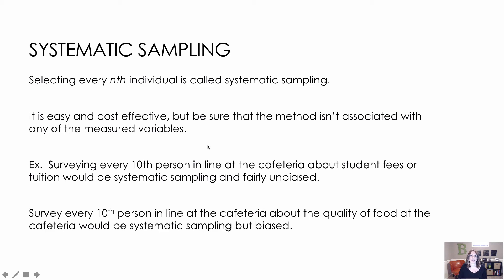Systematic sampling is when you choose every nth individual. For instance, if people are standing in line at the cafeteria and I talk to every fifth or every tenth person, that would be systematic sampling. It's typically easy and cost-effective. We need to make sure the method isn't associated with any of the measured variables. For example, surveying every tenth person in the cafeteria line about student fees or tuition is fairly unbiased systematic sampling.